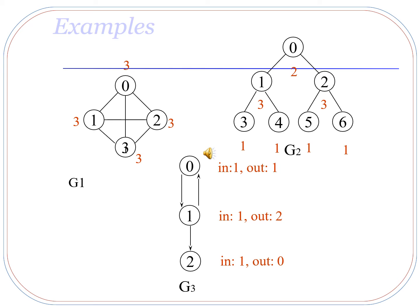Graph G3 is a directed graph, so we have to calculate both in-degree and out-degree. The in-degree of node 0 is 1 because there is only one incoming edge to node 0, and the out-degree of node 0 is 1 because there is only one outgoing edge from node 0. The in-degree of node 1 is 1 (from node 0) and the out-degree of node 1 is 2, with two outgoing edges going to node 0 and node 2. The in-degree of node 2 is 1 (from node 1) and there is no outgoing edge, so the out-degree of node 2 is 0.